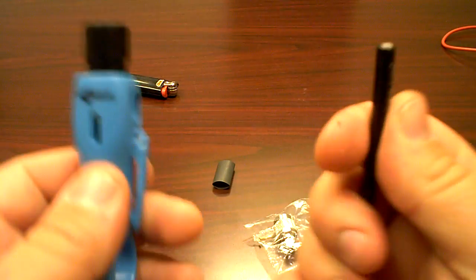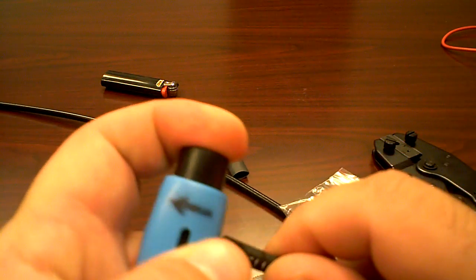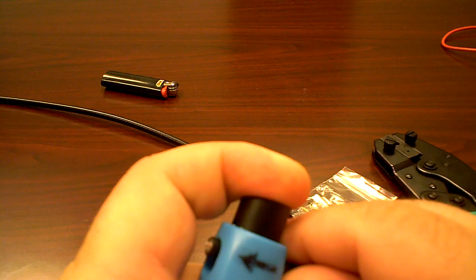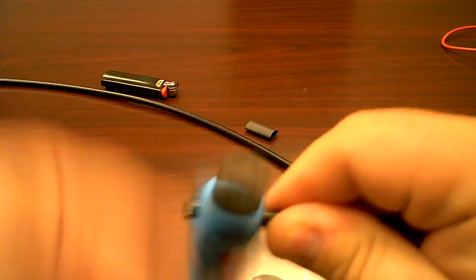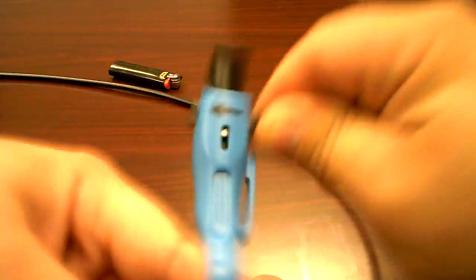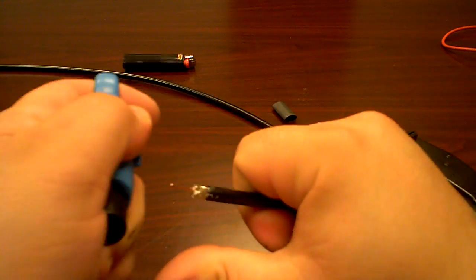Next, basically we're going to take strippers. There's different types of strippers for this. Basically insert your wire through whatever the proper length is you want. Just spin them.